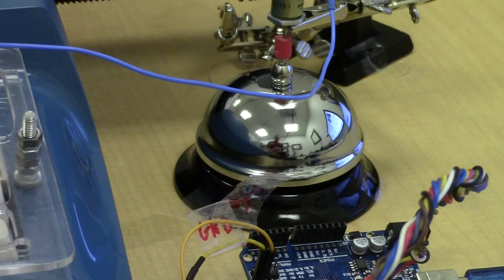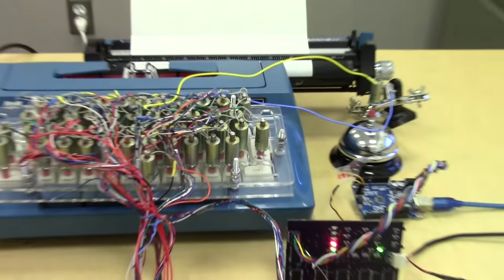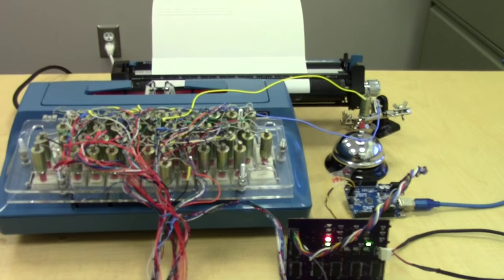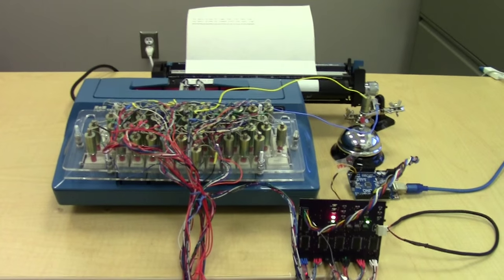You'll notice I also have a bell here. The typewriter does have a bell, as they all do, but the bell is used for a special extra part of the project that is in the other video.